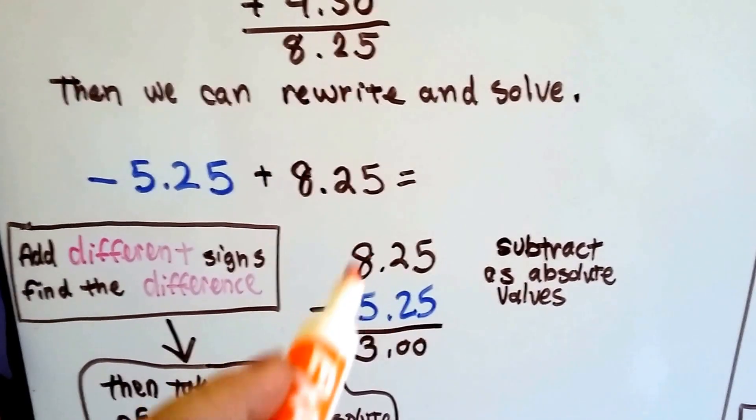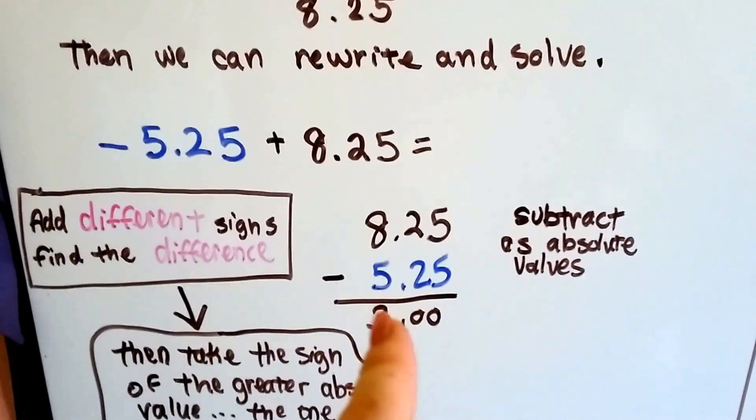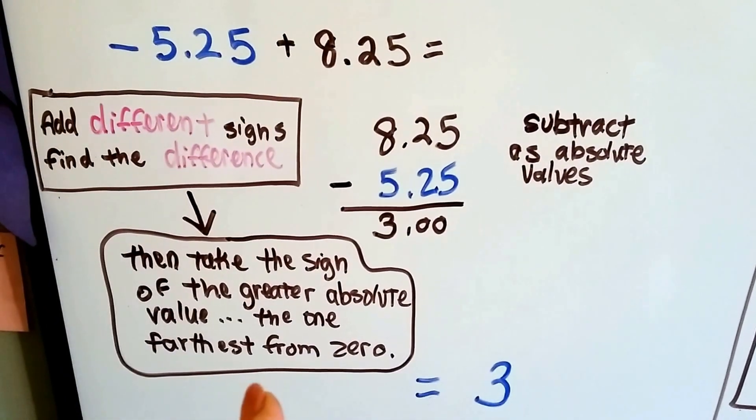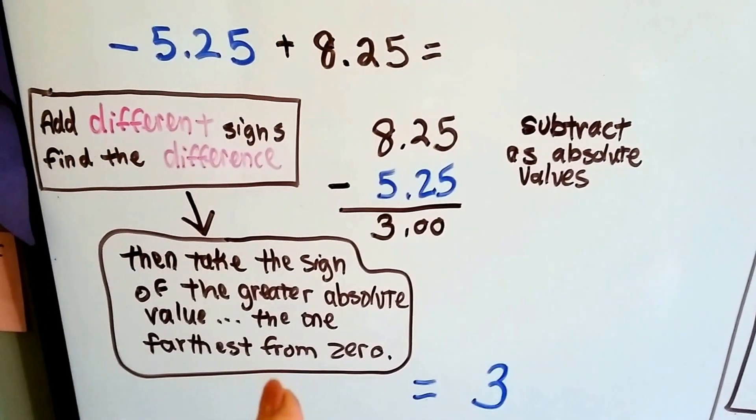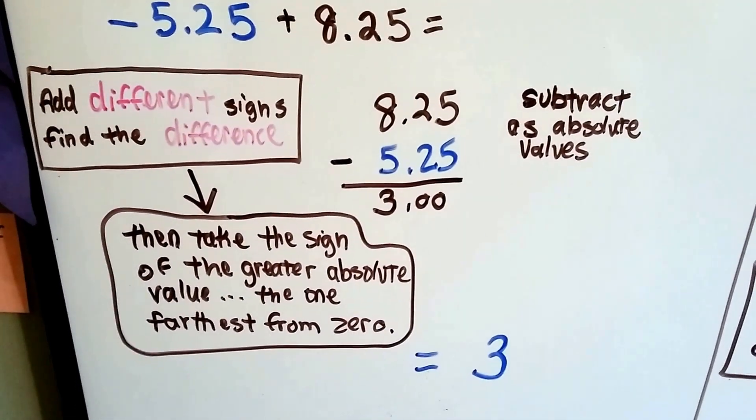We subtract with absolute values, how far they are away from 0 regardless of their sign. Then we look at the sign and take the signs of the greater absolute value, the one that's farthest from 0, and the 8 is farther from 0. It's positive, so our answer is positive. Positive 3.